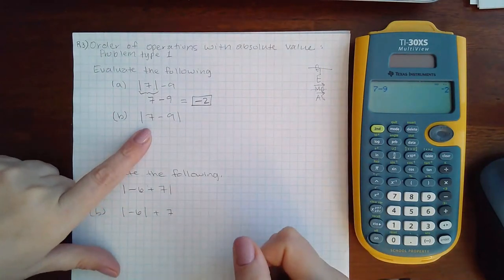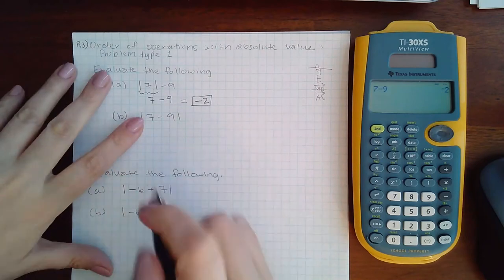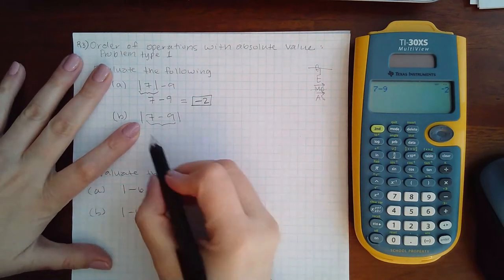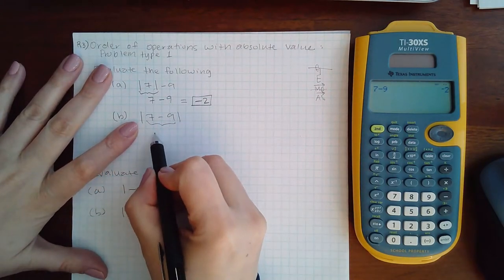Now here you do have the absolute value bars, but notice that there is something to do on the inside. So in this case, the bars are considered a group, and if I work that out, seven minus two is negative two.